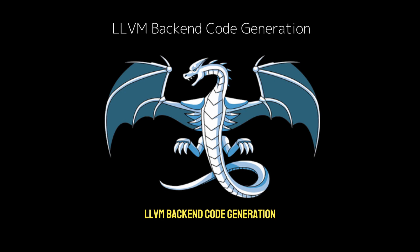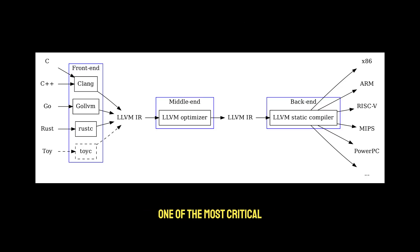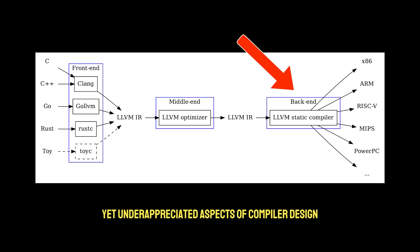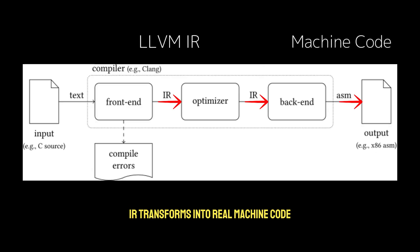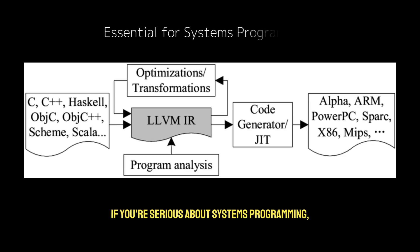LLVM backend code generation — one of the most critical yet underappreciated aspects of compiler design. This is where abstract LLVM IR transforms into real machine code that your CPU can actually execute. If you're serious about systems programming, this is knowledge you must have in your toolbox.